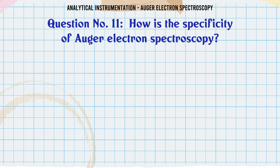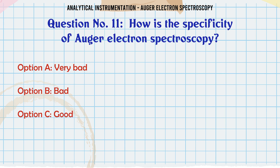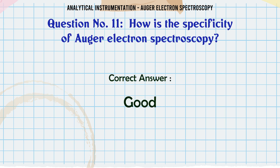How is the specificity of Auger electron spectroscopy? A. Very bad. B. Bad. C. Good. D. Very good. The correct answer is Good.